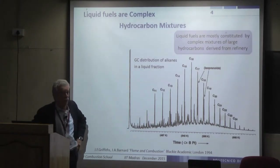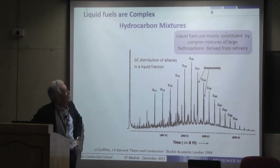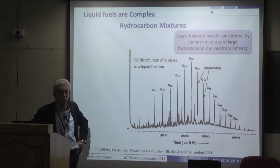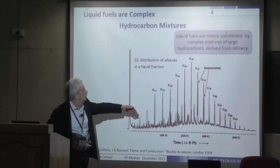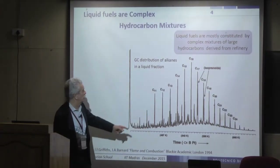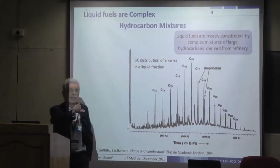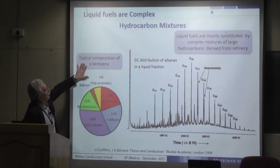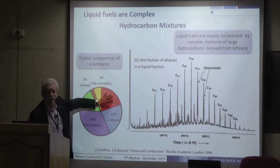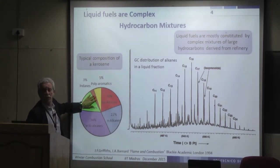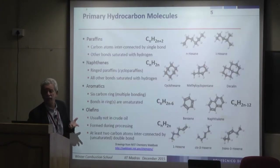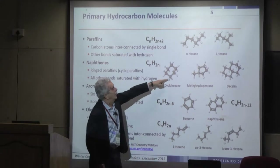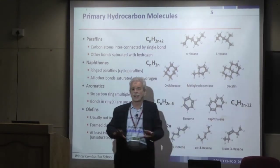Liquid fuels are mixtures containing a large number of components. GC analysis of the paraffinic fraction C11–C24 of a diesel fuel shows all the normal paraffins plus many isomers of branched paraffins. The typical fuel composition always contains branched alkanes, normal alkanes, cycloalkanes, and some aromatics. The species families are paraffins CnH2n+2, naphthenes (e.g., cyclohexane or decalin), aromatics (benzene CnH2n-6, naphthalene CnH2n-12), polyaromatic hydrocarbons, and olefins CnH2n.